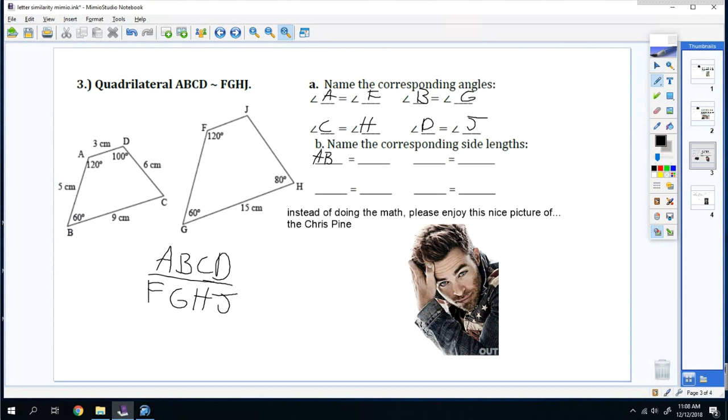So side length AB goes with FG. BC goes with GH. CD goes with HJ. And then AD goes with FJ.